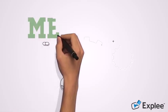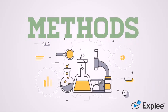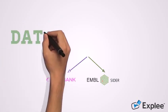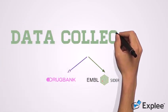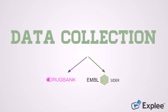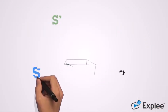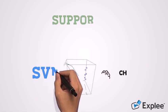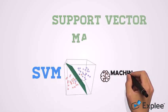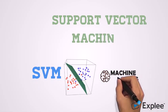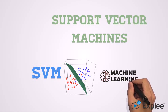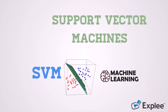Here are the methods. The data were collected mainly from two sources: Drug Bank and EMBL. The machine learning algorithm used is called Support Vector Machines, or SVM. SVM is a supervised classification algorithm. The authors used SVM to classify whether a given drug causes a certain side effect or not.